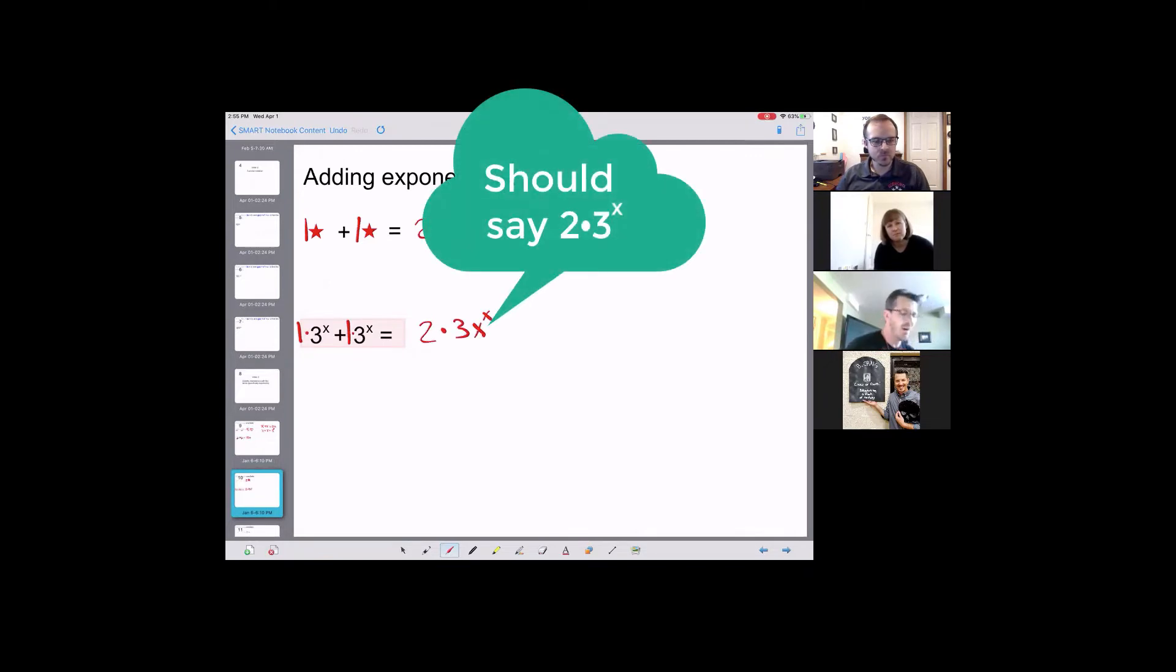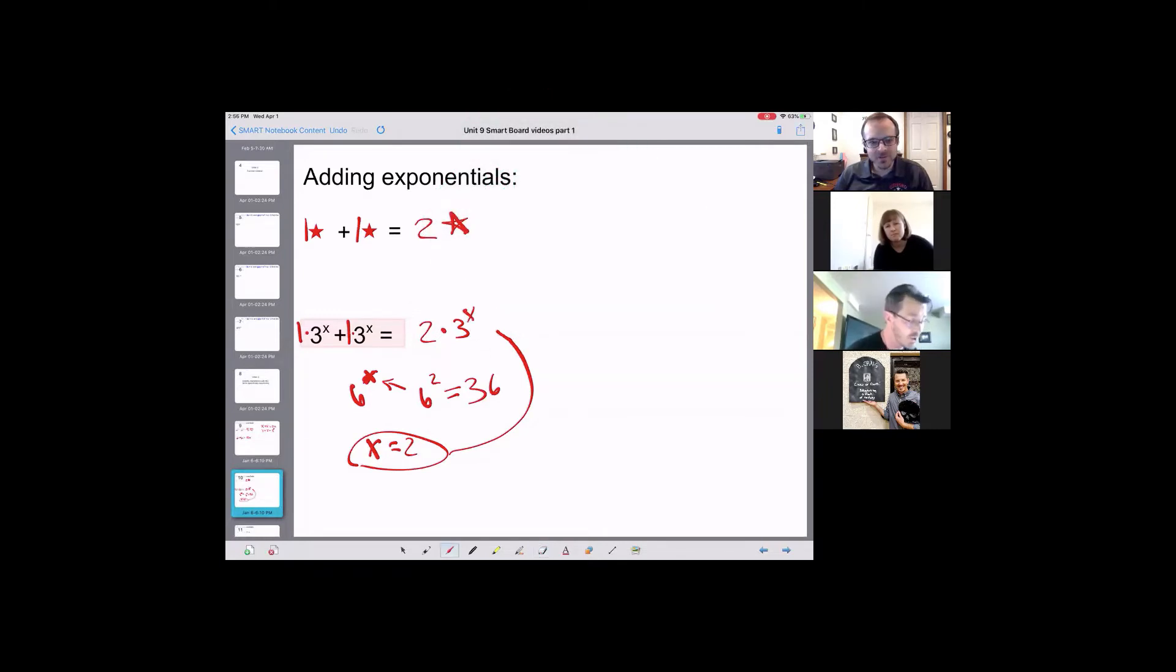So what I end up with is two times three to the X. Because I have two, three X's and some people are saying, well, Mr. Craig, why isn't it just six to the X? Well, it's because we don't know what the variable is. So let me give you an example. If I said the variable was X equals two and we plug that in, then this would be six to the two, which is 36. However, if I plug X is two into this equation, which is, I have two, three to the X's. But if I substitute that X, I get two times three to the two.